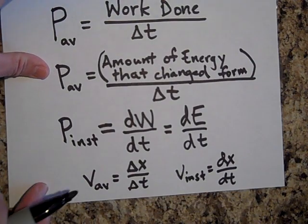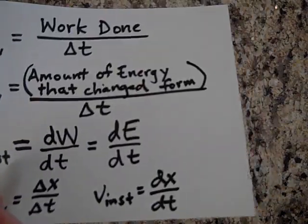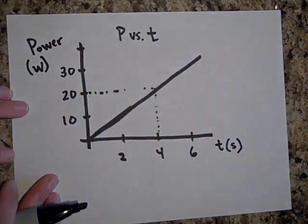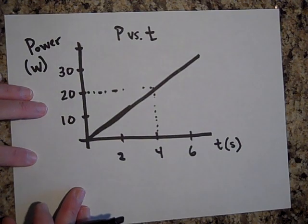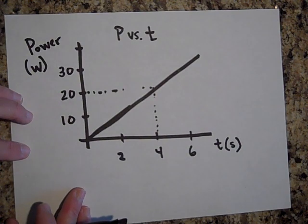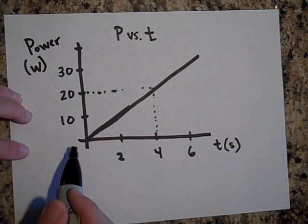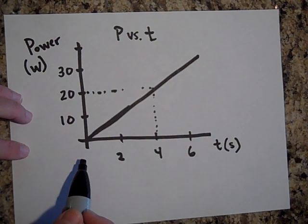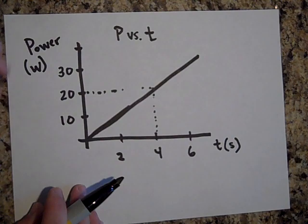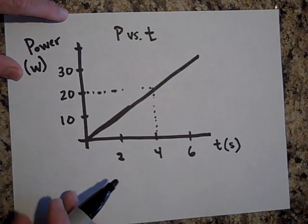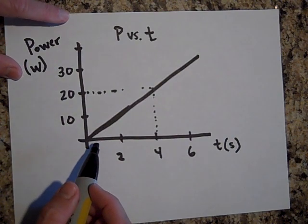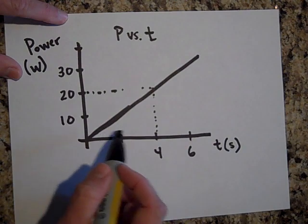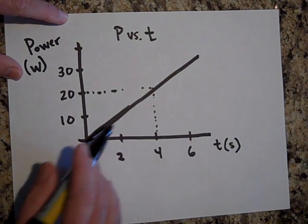Okay, so let's take a look then. Let's have the power of an object given by this graph. So there's a force that is working on an object with a particular power and we're going to analyze this problem with this graph.